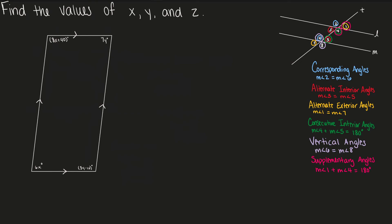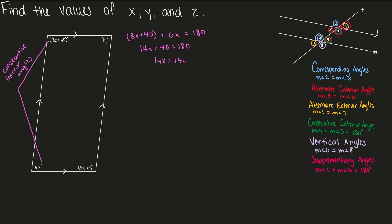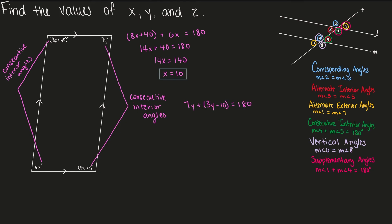Next, we have a parallelogram, and we need to solve for x and y. Notice that 8x + 40 and 6x are consecutive interior angles, so their sum equals 180: 6x + 8x + 40 = 180. Combining like terms: 14x + 40 = 180, so 14x = 140, and x equals 10. Now for y: 7y and 3y − 10 are also consecutive interior angles, so 7y + 3y − 10 = 180. Combining like terms: 10y − 10 = 180. Add 10 to both sides: 10y = 190, and y equals 19.